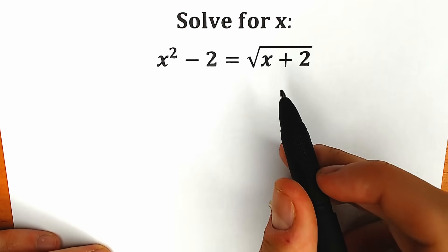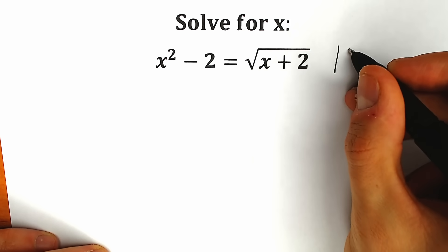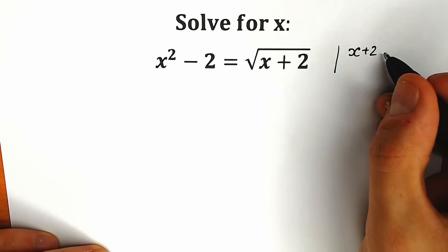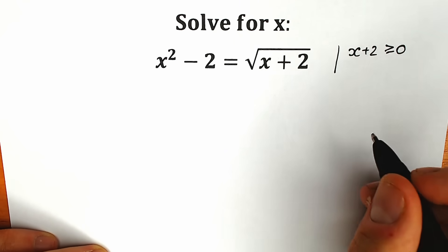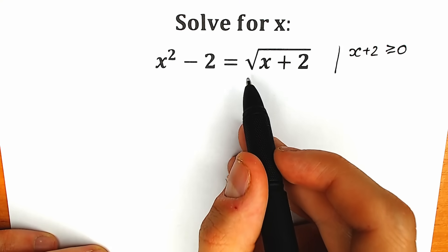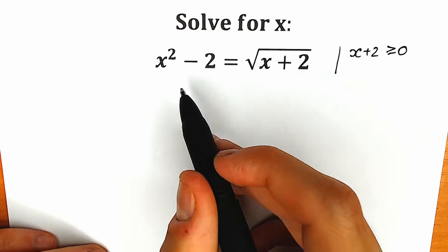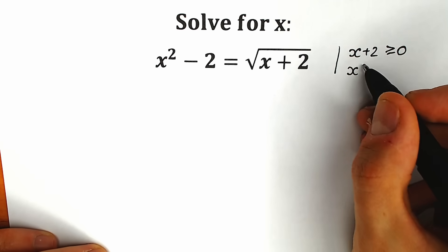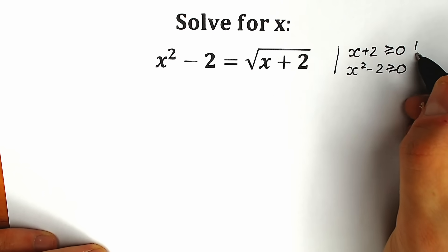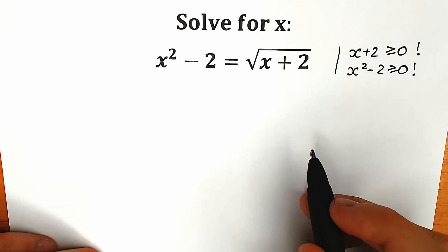First I want to mention one really important moment. We have a square root here, so our expression x plus 2 needs to be positive, greater or equal than zero. And of course our left side expression x²-2 also needs to be positive, because an expression with a square root cannot be negative. These are two extremely important conditions for our question.